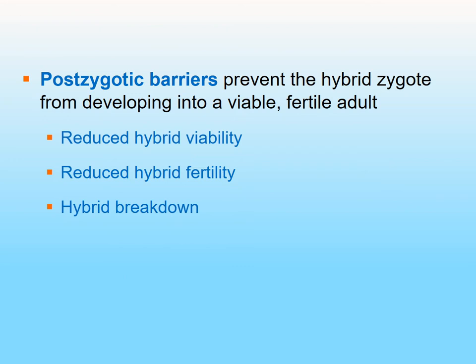Now let's talk about postzygotic barriers. This is after fertilization — assuming the mating attempt has occurred, the mating process has occurred, and the egg and sperm have actually fused and produced some sort of offspring. When that happens, we create hybrids. A hybrid is basically the fusion of egg and sperm from two different species.